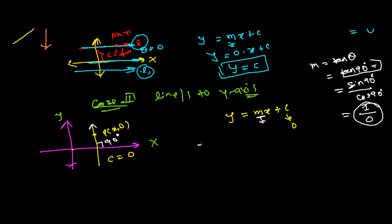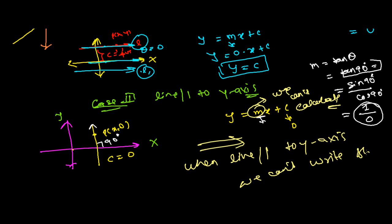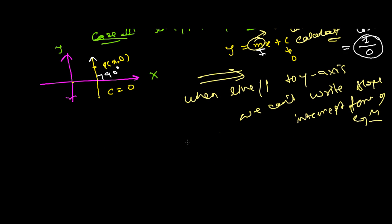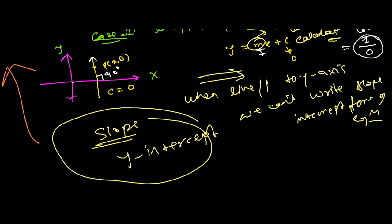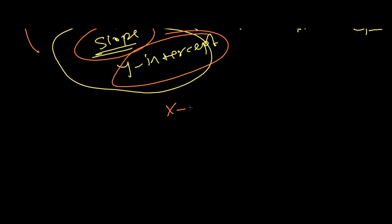When a line is parallel to the y-axis, m is an undetermined value — we simply cannot calculate it. Therefore, we cannot write the slope-intercept form of the equation in this case. The slope-intercept form y = mx + c only applies when we are given the slope and the y-intercept.